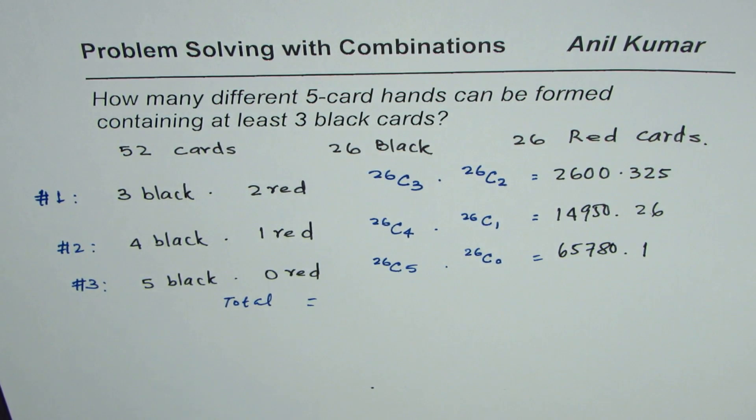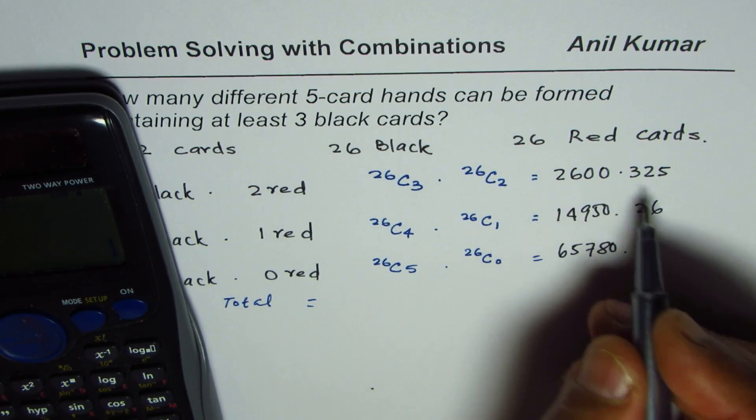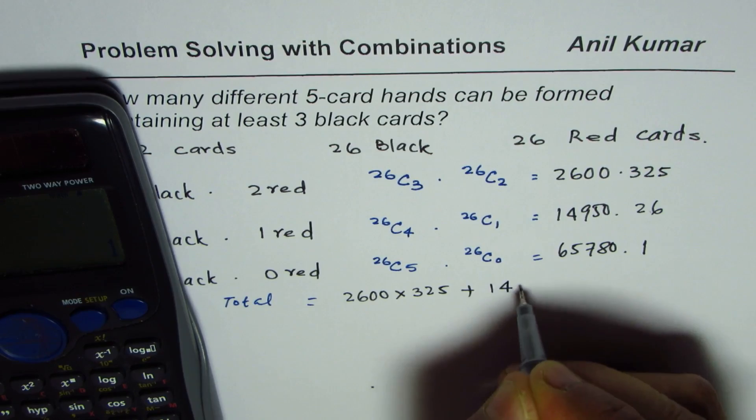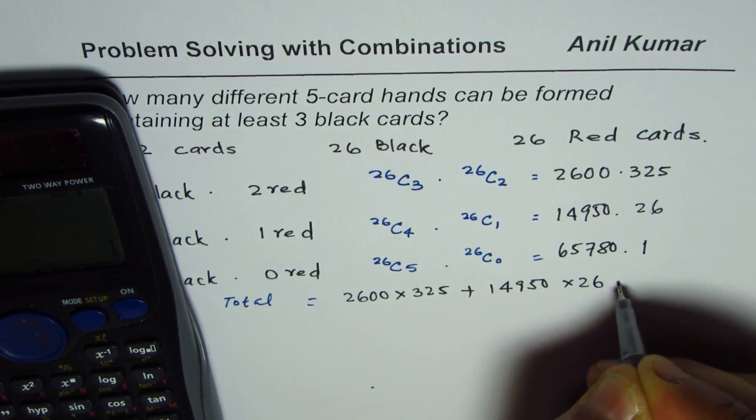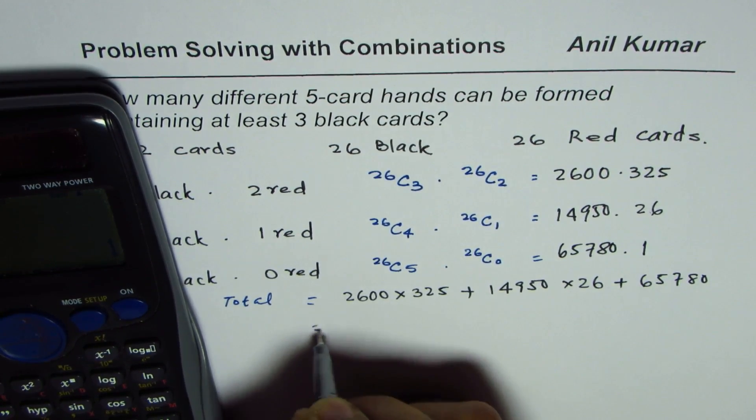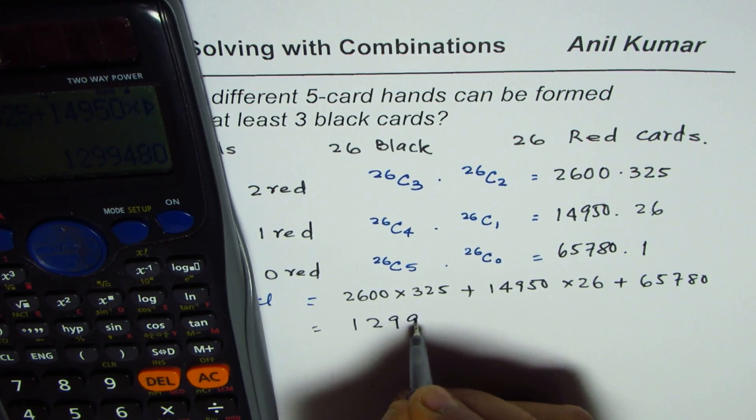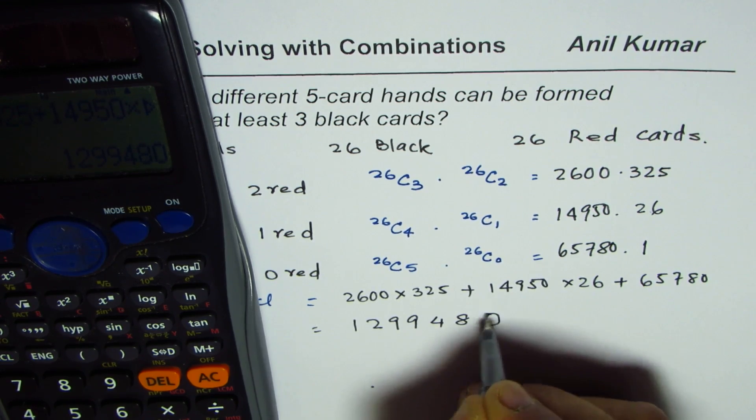You can actually multiply them and add them up to get all the combinations. So, what we have here is 2600 times 325, plus 14,950 times 26, plus 65,780. So, we have 2600 times 325, plus 14,950 times 26, plus 65,780, equals to, we have a big number here, 1,299,480.